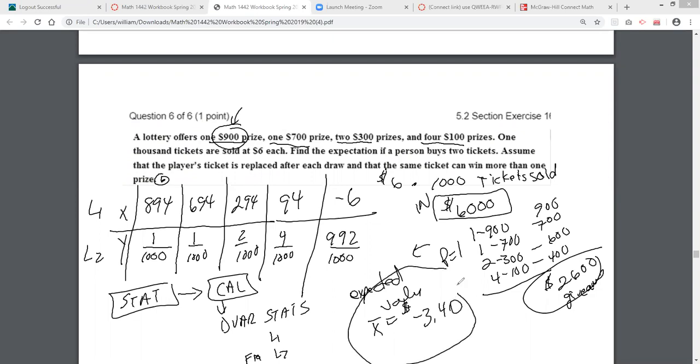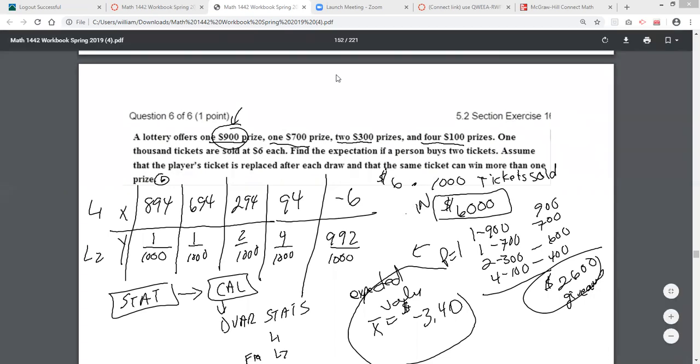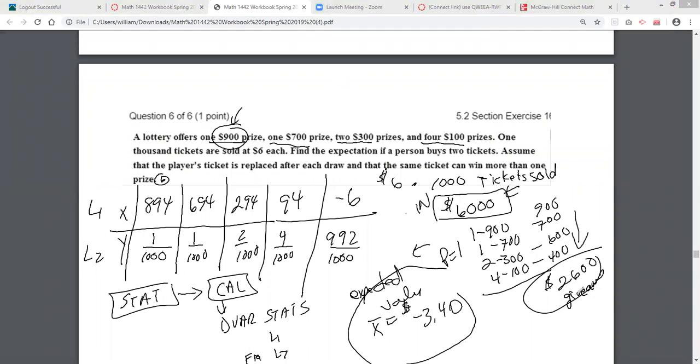In other words, if you bought all the tickets, you're expected to lose $3.40 overall for every ticket that you buy. Because, you know, they're only giving, look, they're only giving $2,600 in prize money back. They took in $6,000. $6,000 minus $2,600 is $3,400. Do you see? That's why there's 1,000 tickets. For every ticket you spend, you can expect to lose $3.40.